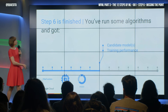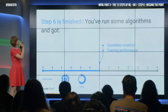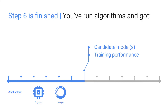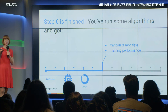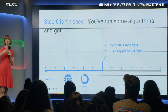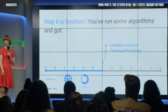Step six is finished when you've got your candidate models and you know how they performed in your training data. You expect that their performance in training is better than their performance elsewhere. So if they're not meeting your bar in training, don't proceed.